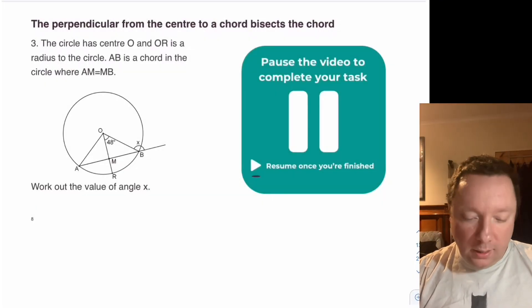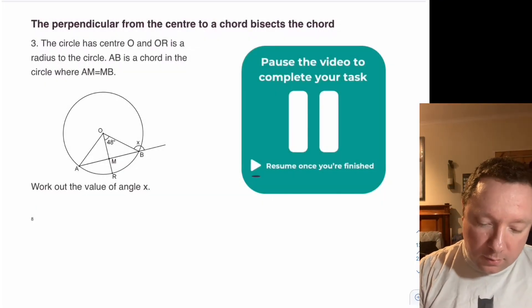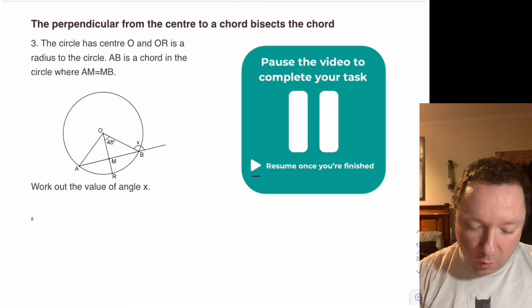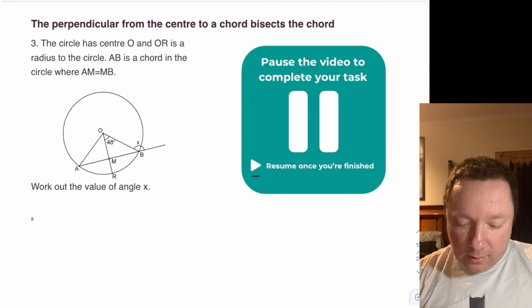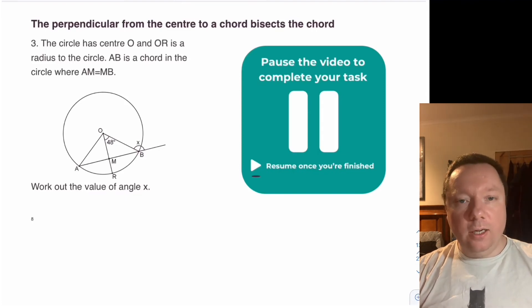Question three for you to try. The circle has centre O and OR is a radius to the circle. AB is a chord and it tells you that AM equals BM. Work out the value of angle X, which is down here. Pause the video here. Give it a go. See how you get on.